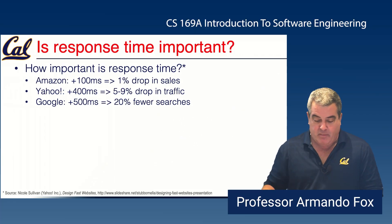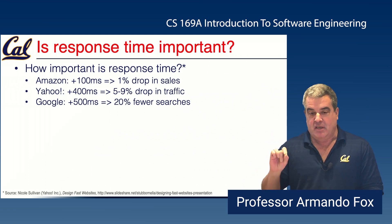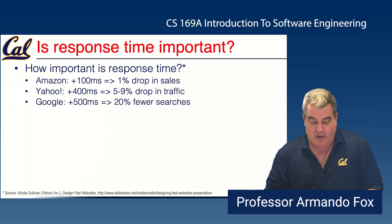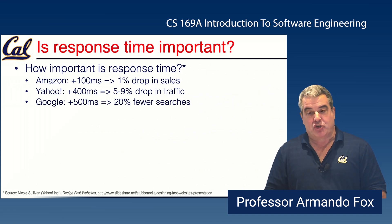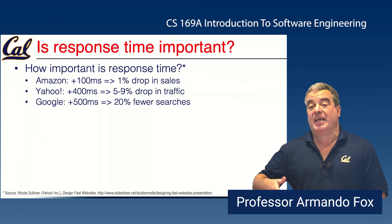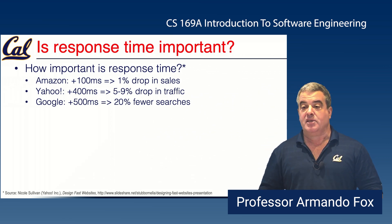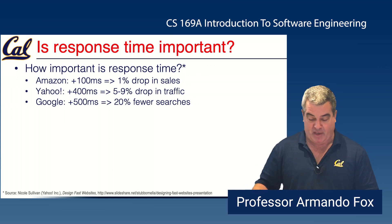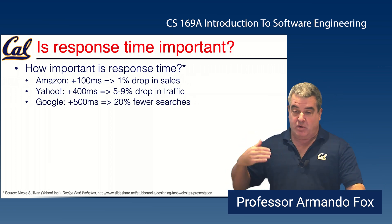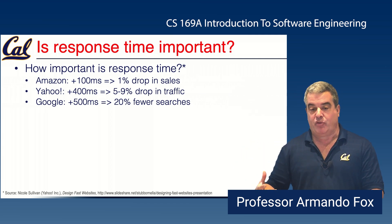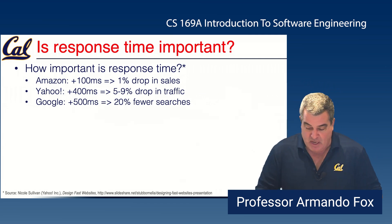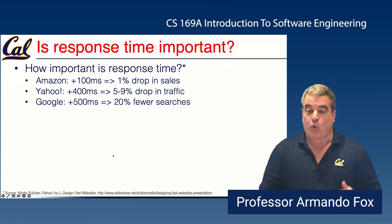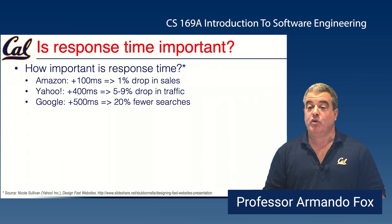They created a randomized trial where they would deliberately inject a small amount of latency into certain users' requests — randomly selected — up to 500 milliseconds of latency. Then they would measure the effect on their key performance indicators. For Amazon, that's sales. For Google, it's the number of searches, since they serve advertising alongside search results. Basically all these providers found a measurable, statistically significant drop in their key performance indicators correlated with injecting even just a few hundred milliseconds of delay.